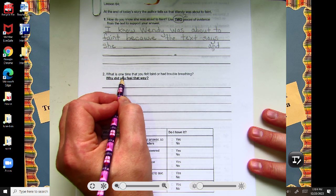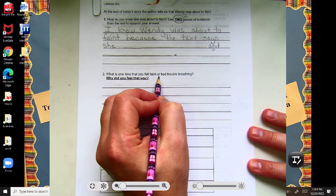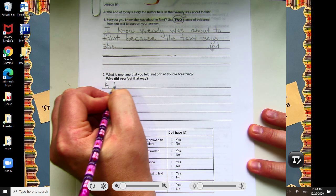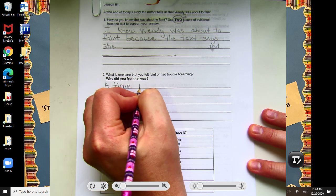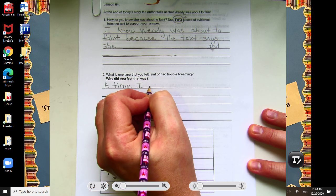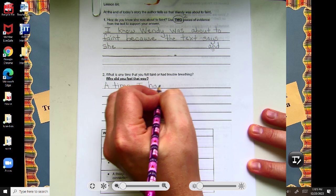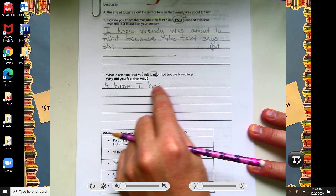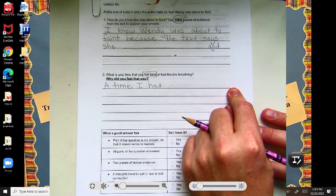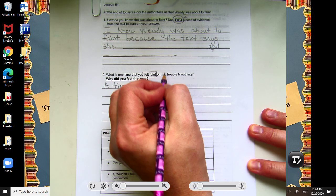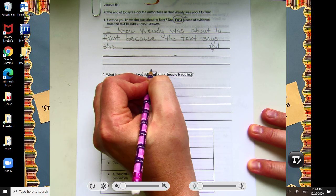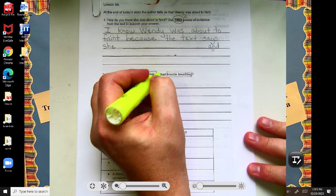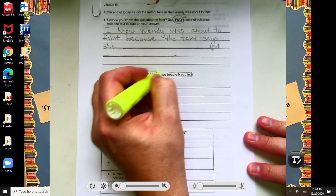For number two, what is one time that you felt faint or had trouble breathing? A time I, and then you'd want to pick, right. You could write about felt faint, so it could be a time I felt faint was, or a time I had trouble breathing. So, you're going to be doing feeling faint, or that you had trouble breathing. You're going to have to pick one or the other.